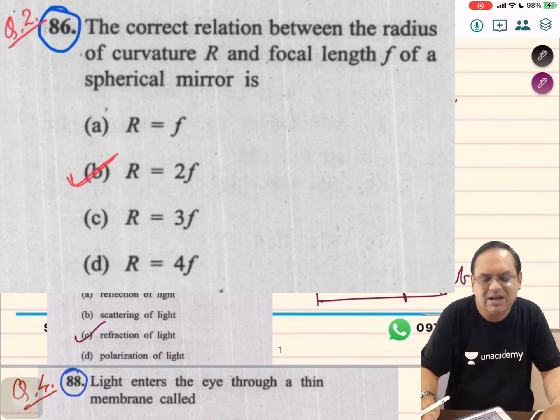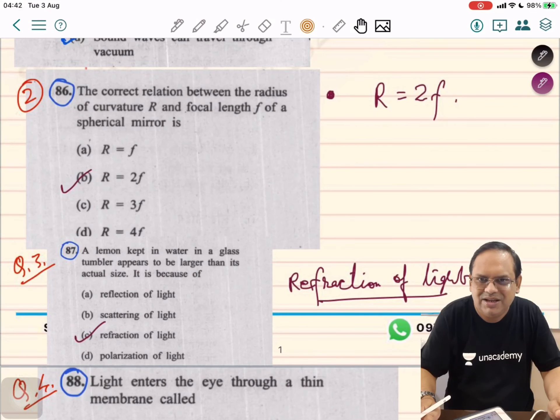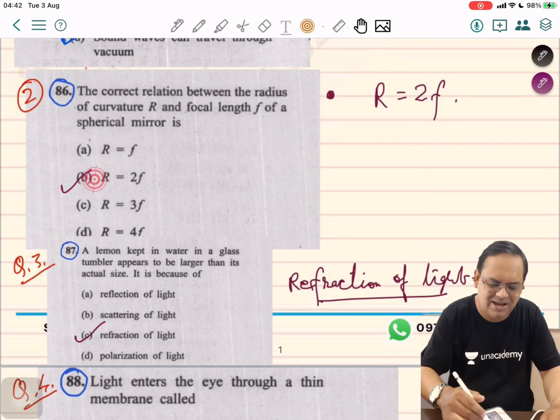This paper question number 86. The correct relation between the radius of curvature R and focal length f of a spherical mirror is R equals 2f. So option B is correct.